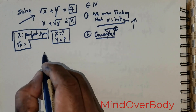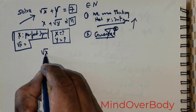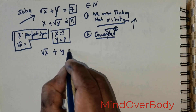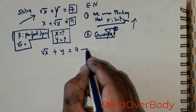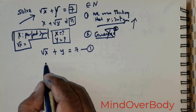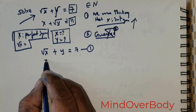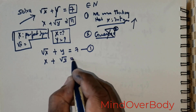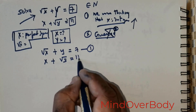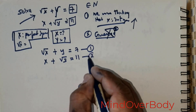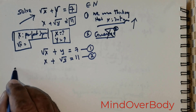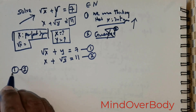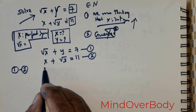So let me rewrite the question. I've got root of x plus y is equal to 7 — I'm going to take this as equation 1. I've got x plus root of y is equal to 11 — I'm going to take this as equation 2. Now what I'm going to do is subtract equation 1 minus equation 2.